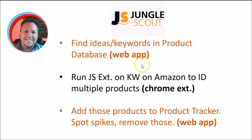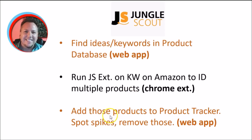To recap the process: find ideas and keywords in the product database via the web app, run the Jungle Scout Chrome extension on Amazon to identify multiple products, then bring those products into the product tracker in the web app. It helps you spot anomalies and remove them, giving you a solid set of products to choose from.